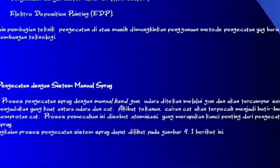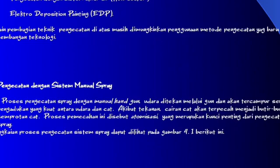Yang pertama yaitu pengecatan dengan sistem manual spray. Proses pengecatan spray dengan manual handgun: udara ditekan melalui saluran dan akan tercampur serta terjadi pengadukan yang kuat antara udara dan cat. Akibat tekanan, cairan cat akan terpecah menjadi butir-butir partikel semprotan cat. Proses pemecahan ini disebut atomisasi, yang merupakan kunci penting dari pengecatan sistem spray.